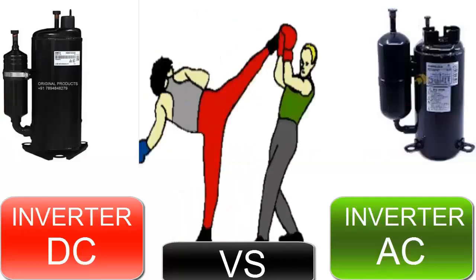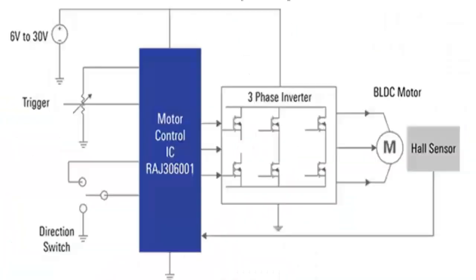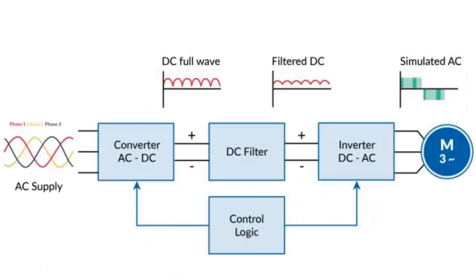8. DC compressors use advanced electronic controllers that optimize performance and energy efficiency, while AC inverters use variable frequency drives that allow precise control of motor speed and torque.